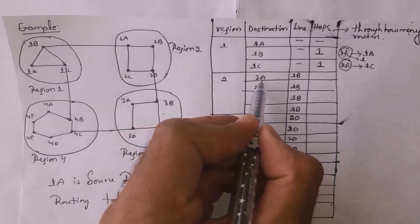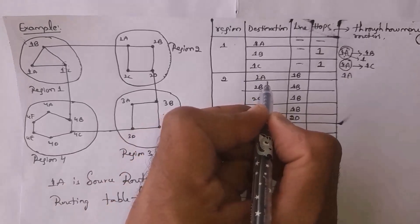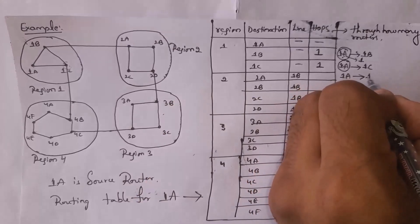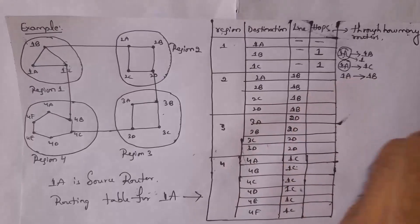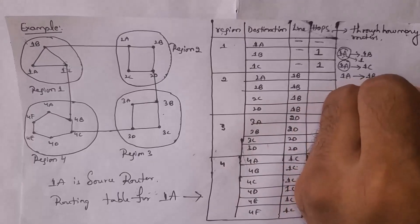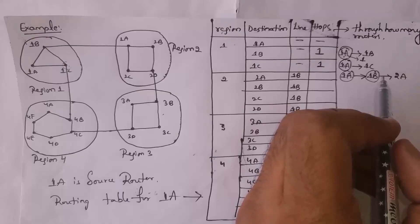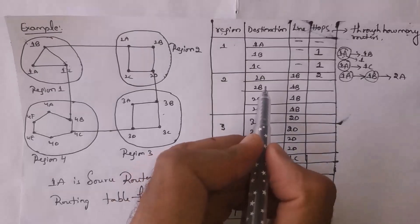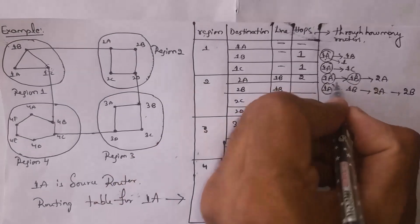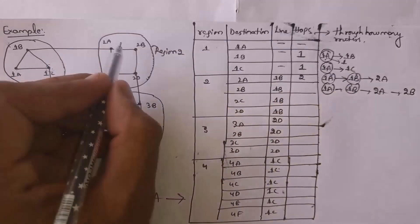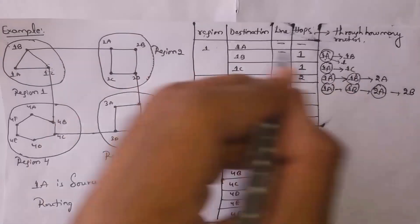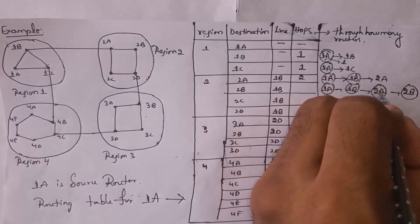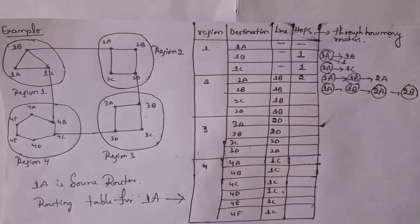For destination 2A: data travels from 1A to gateway router 1B, then to 2A — hop count is 2. For destination 2B: data travels 1A → 1B → 2A → 2B — hop count is 3. For destination 2C: data travels 1A → 1B → 2A → 2C — hop count is 3.